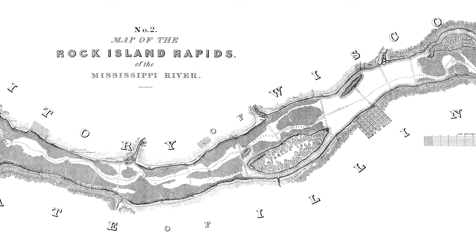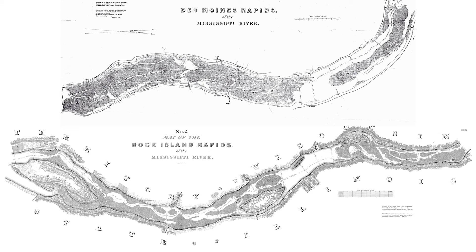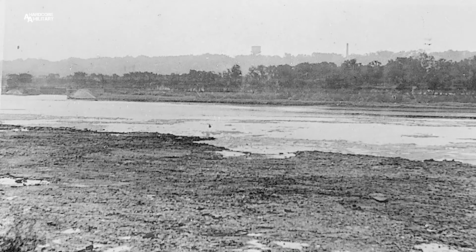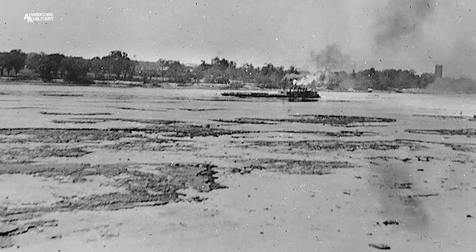Lee surveyed the Des Moines Rapids above Keokuk, Iowa and the Rock Island Rapids, which ran from Leclerc, Iowa to Rock Island, Illinois. These two areas were the most serious obstacles on the Mississippi River and virtually halted steamboat traffic during low river stages. Lieutenant Lee proposed improvements by excavating rock to deepen the channel, and work was authorized in 1852.